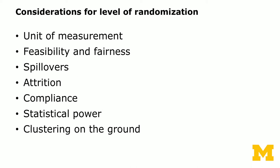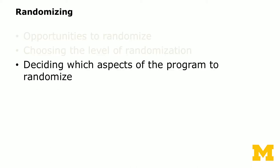Here are some key considerations for the level of randomization. Usually, larger clusters reduce statistical power. You might be worried about feasibility and fairness — if one class receives additional teachers and another doesn't, parents might feel that's unfair. You might also worry about spillovers, attrition, or compliance issues. When you randomize at a lower level such as the individual level, you typically have higher statistical power compared to the school level.